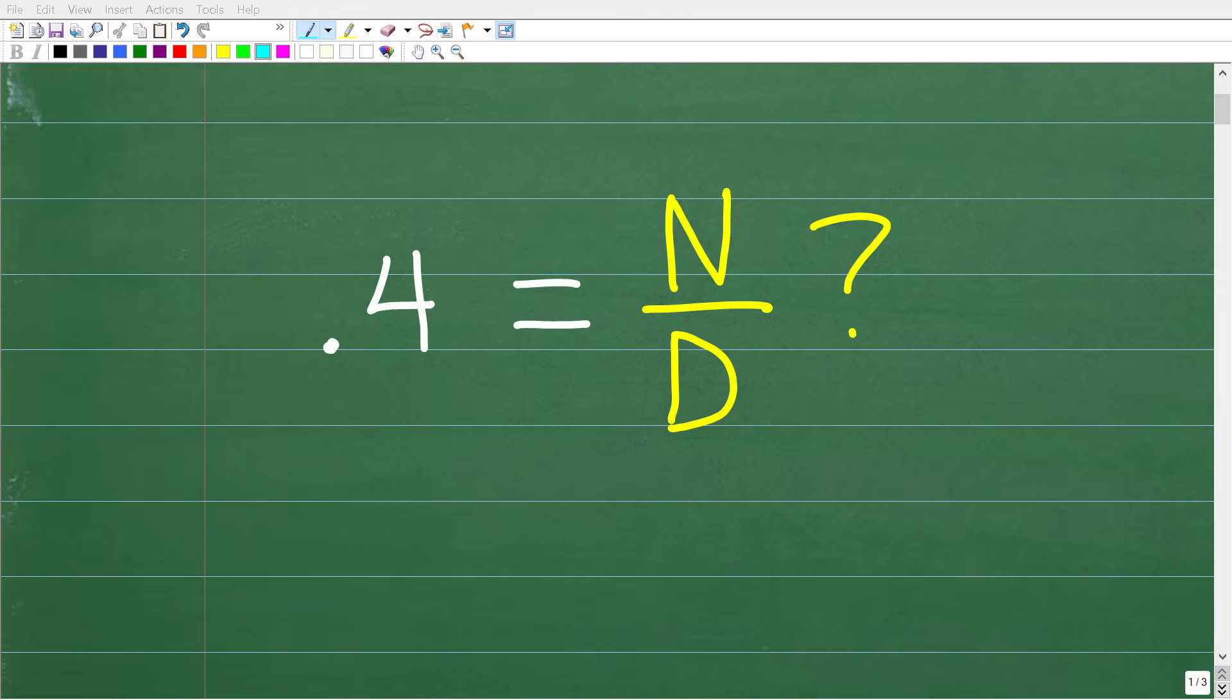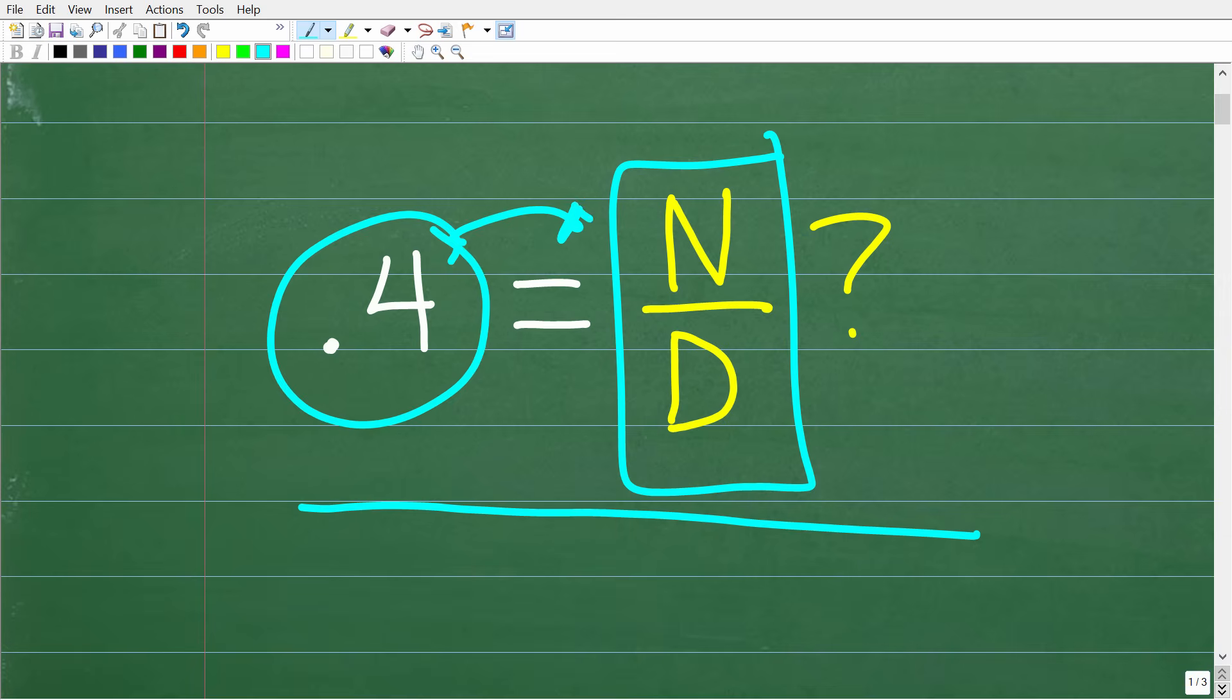Here's a quick video that will help you improve in basic math. What we want to do here is write the decimal 0.4 as a fraction. A fraction has a numerator and a denominator. So how do we write a decimal as a fraction?